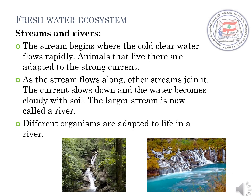The first types of freshwater ecosystems are streams and rivers. The stream begins where the cold, clear water flows rapidly. Animals that live there are adapted to the strong current. As the stream flows along, other streams join it. The current slows down and the water becomes cloudy with soil. The larger stream is now called a river. Different organisms are adapted to live in a river.